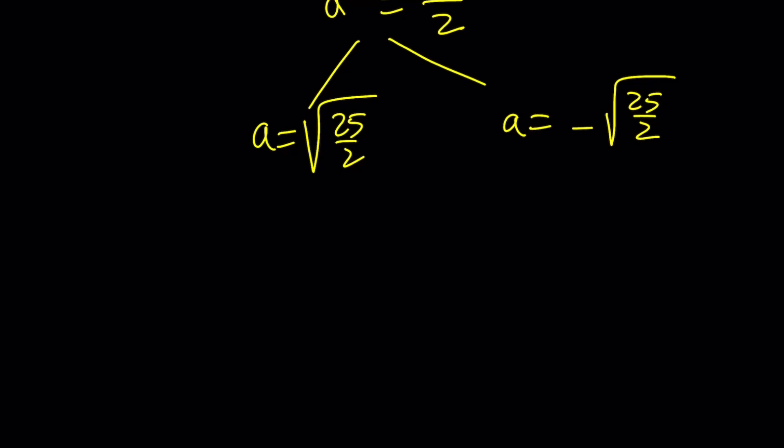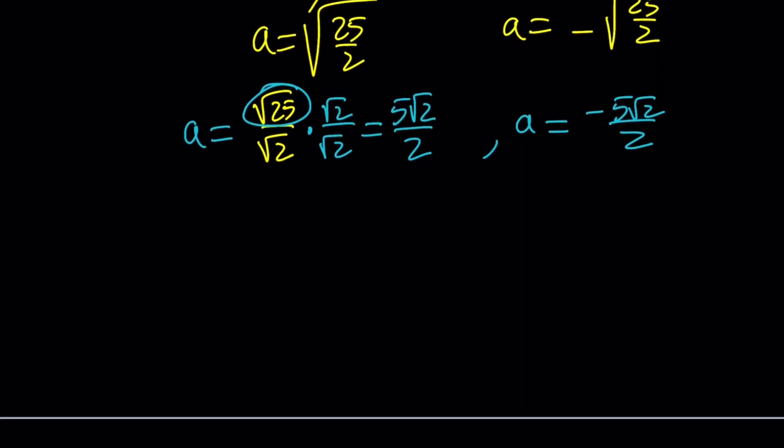How do you simplify this? Square root of 25 over square root of 2. Wait a minute, square root of 25 looks familiar—isn't that 5? Yes, it is 5 root 2 divided by 2. The other a value is going to be negative 5 root 2 over 2. Since b is going to be the same, b equals 5 root 2 over 2 if a equals that, and otherwise b equals negative 5 root 2 over 2.